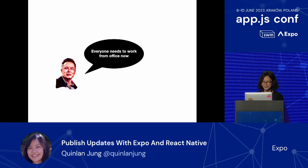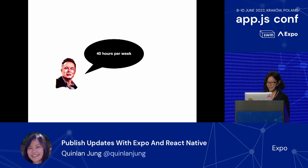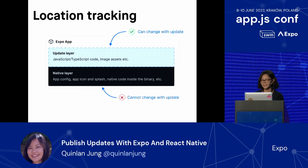Now the great leader has a new big announcement. Not only does everybody need to work from the office, but everybody has to work there at least 40 hours a week. As the tech lead, you're responsible for doing something about it. You have a big brain idea: what if you enforce this with location tracking? If you know where the user is at all times, you can figure out how long they've been spending in the office. So let's take a look at how we're going to implement location tracking in our app.